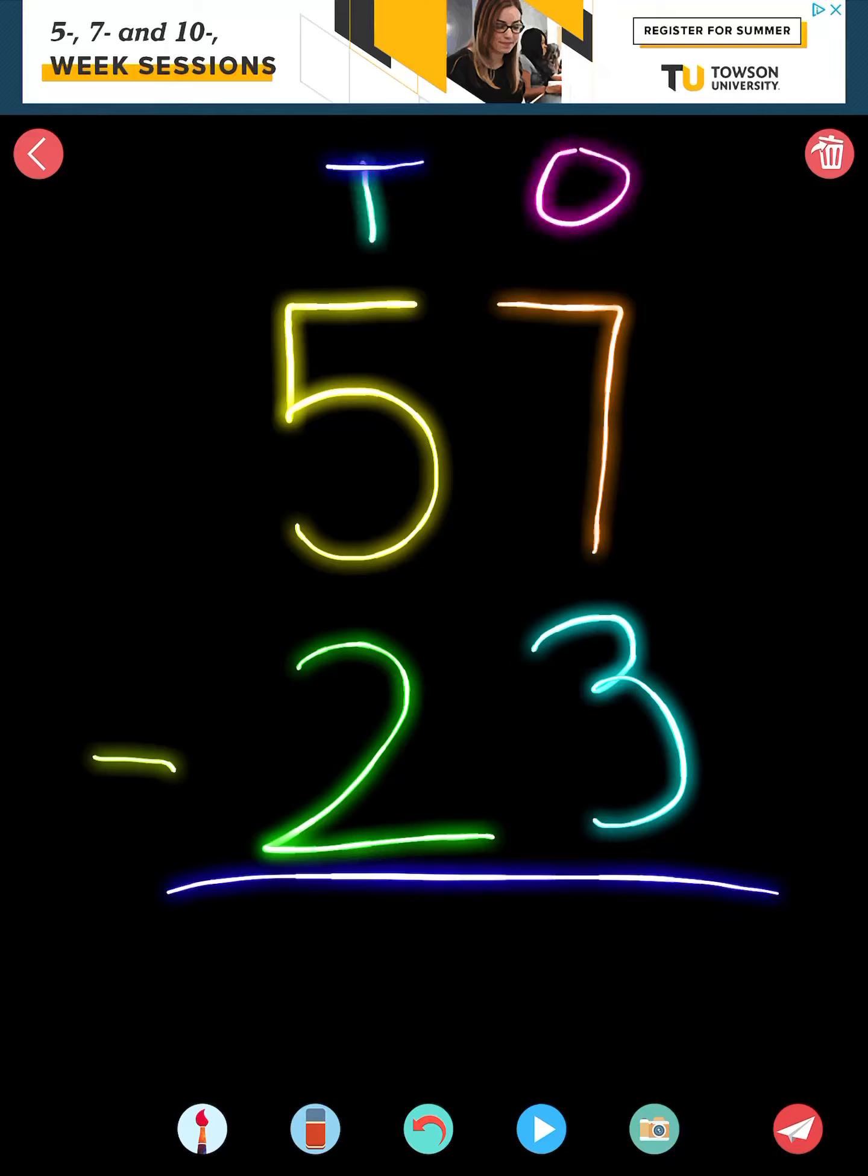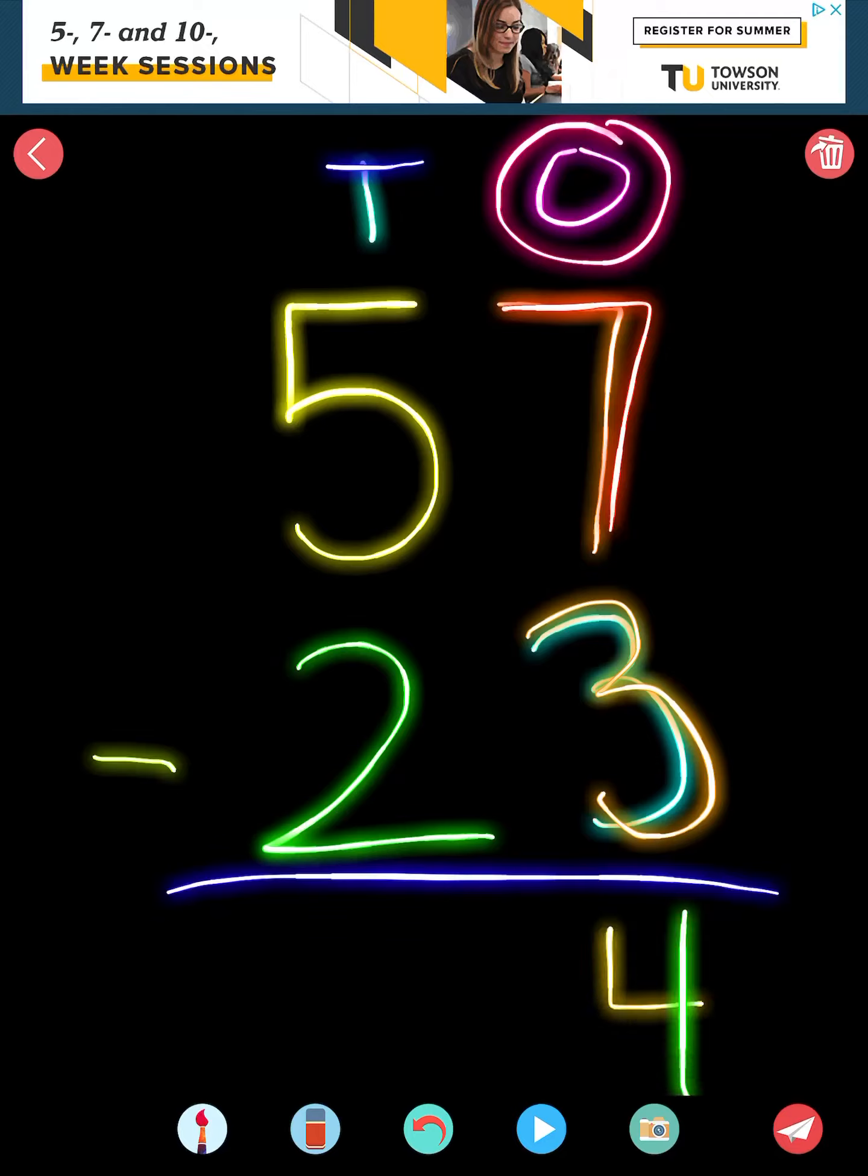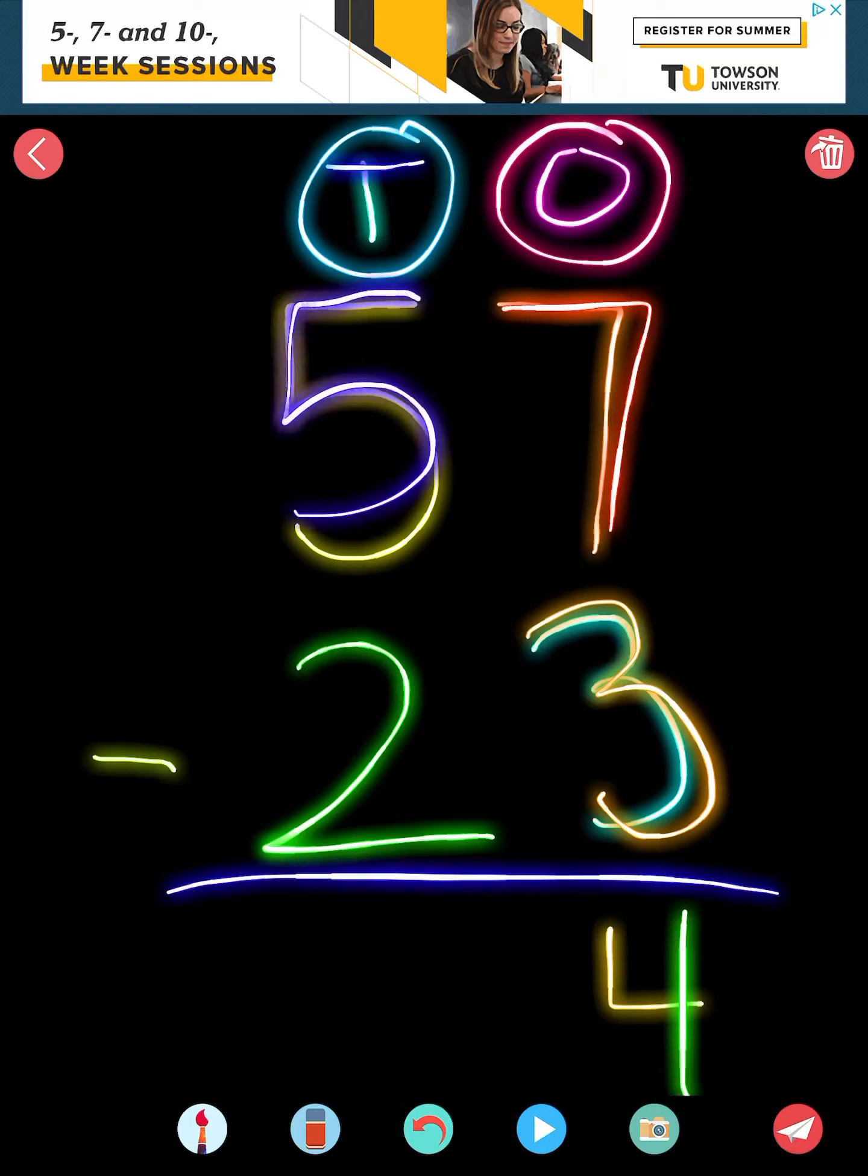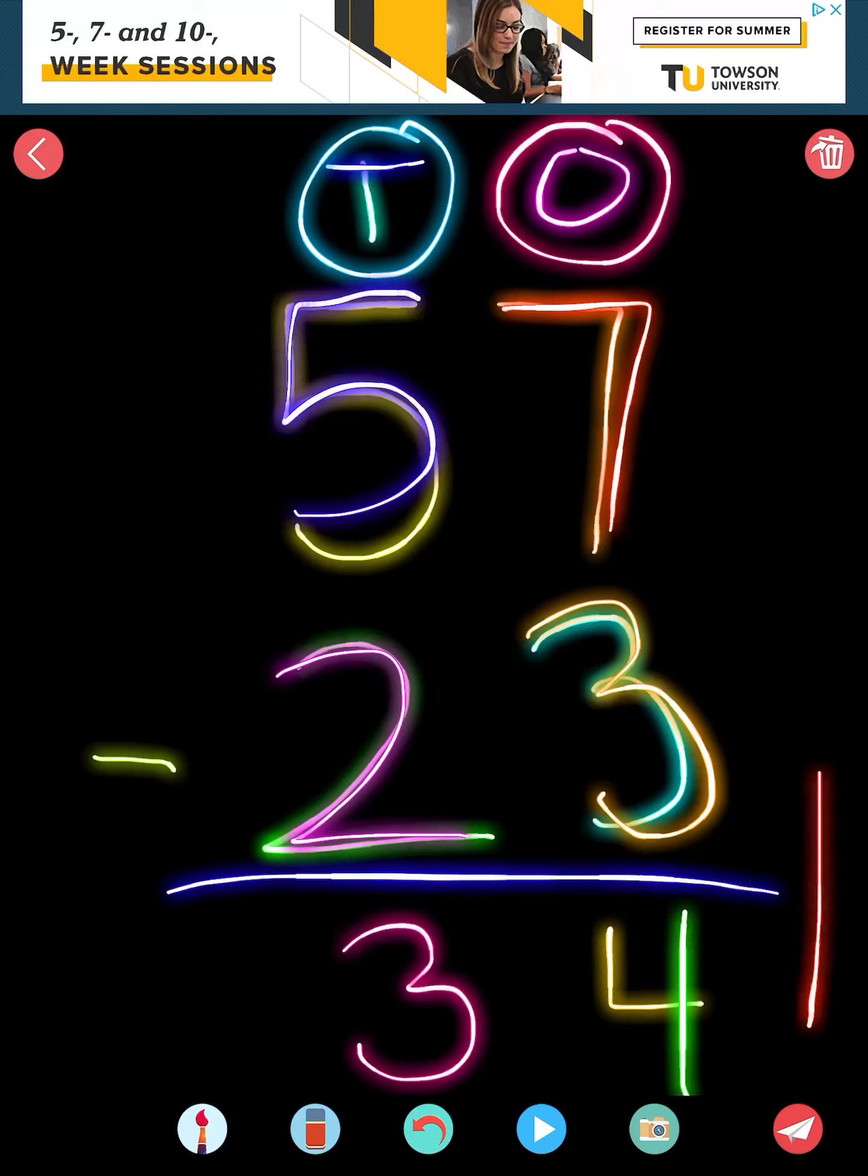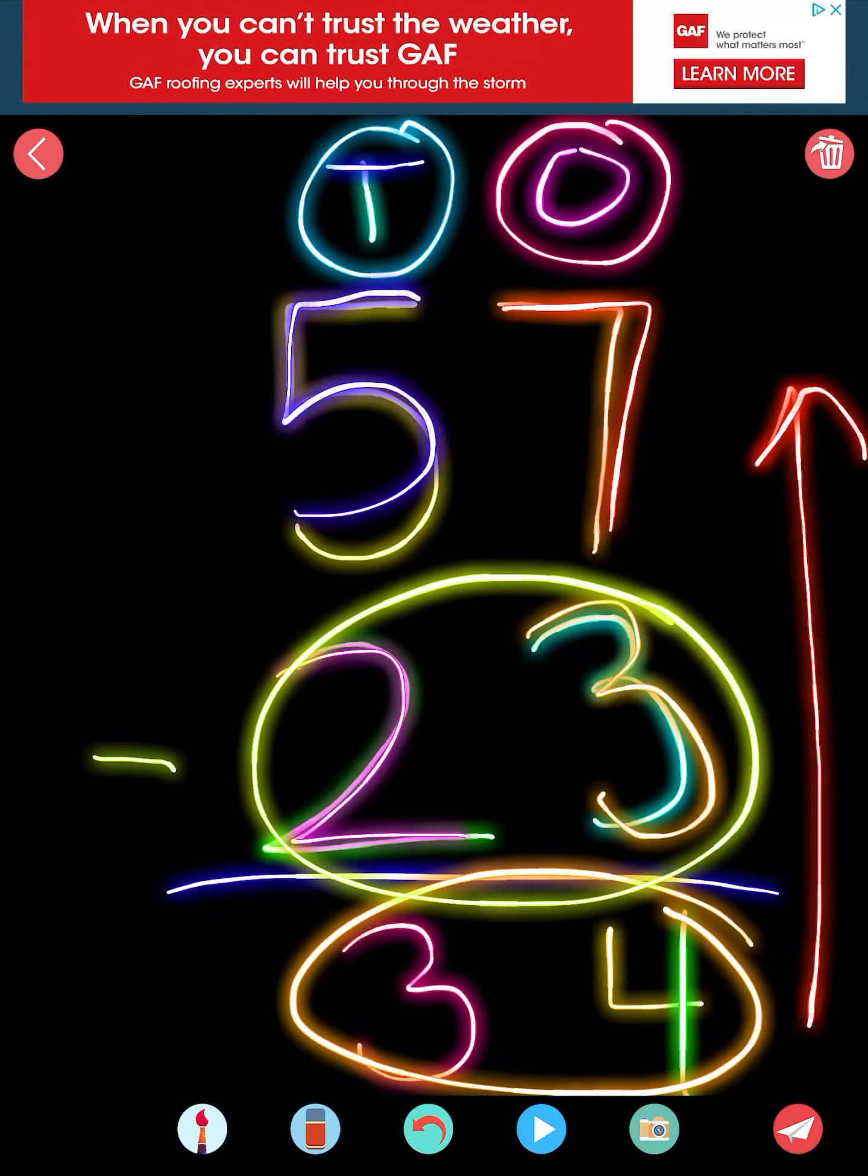TO2 is tens and ones. I always start with my ones. So I would do 7 minus 3 is 4. And then I'd go to my tens. 5 minus 2 is 3. So the answer is 34, which means if I did it opposite way, 34 plus 23 should be 57. That's one way to check it.